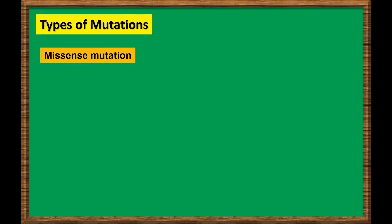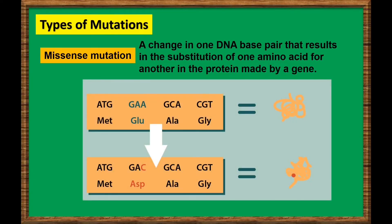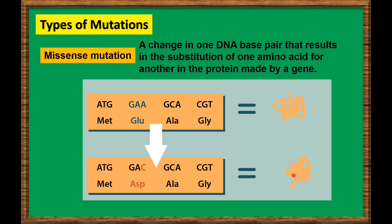Missense mutation. This point mutation is a change in one DNA base pair that results in the substitution of one amino acid for another in the protein made by a gene. For example, if this is the normal sequence of DNA bases to produce this sequence of amino acids during protein synthesis, in a missense mutation, the nucleotide adenine in the second codon was substituted by cytosine, thus leading to a different amino acid — asparagine instead of glutamic acid.